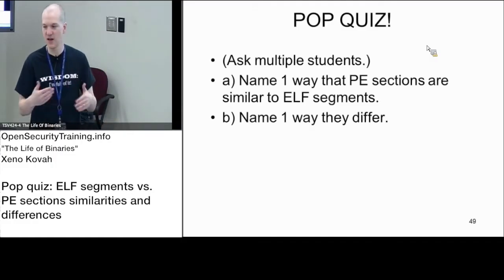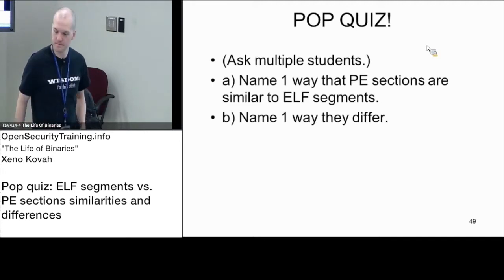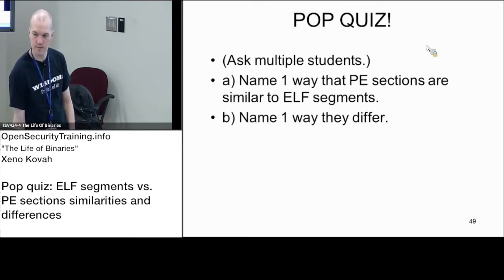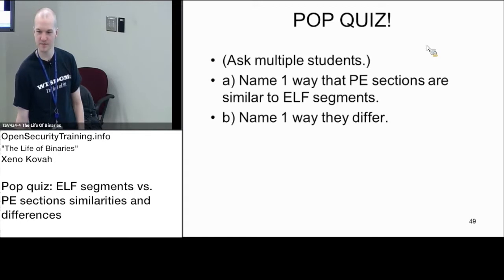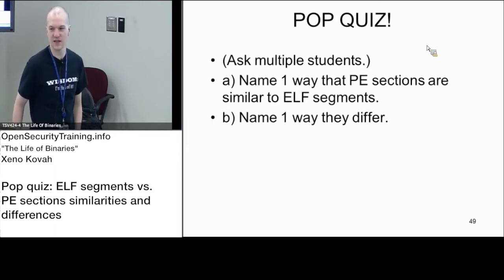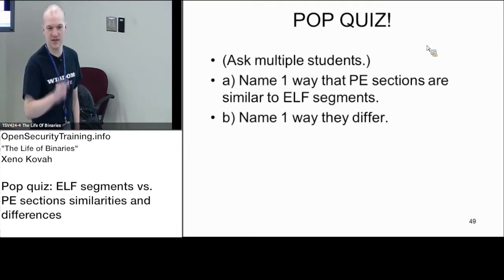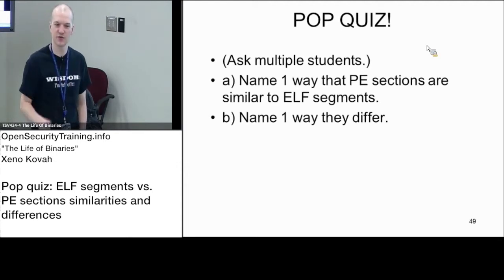You can talk about specific headers that are the exact same equivalent, or you can talk about where they're different. Give me an example of some specific instance of information that's the same. Like the magic — ELF magic and MZ — they're just little things tacked at the beginning of the file saying this is an ELF file or a PE file. If this isn't here, the OS loader shouldn't treat it as such.